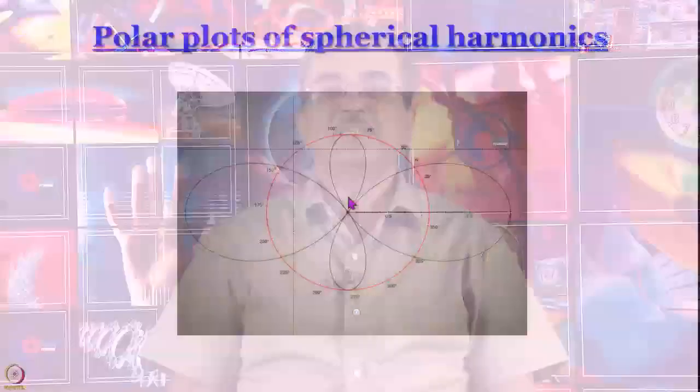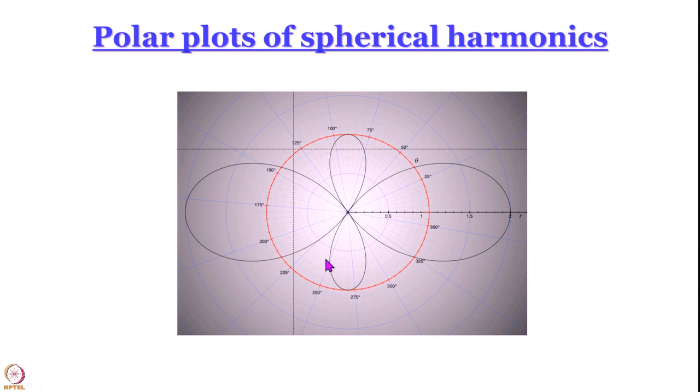In the last module we said we would discuss angular momentum, but I had a second thought. So in the next module we will discuss angular momentum, but today let us finish something that is a logical next step of our previous discussion — something very interesting and often very useful. What we learn in this module is how to draw pictures of spherical harmonics, specifically the theta part. To do that we will learn something called polar plots, which are interesting and useful in many fields.